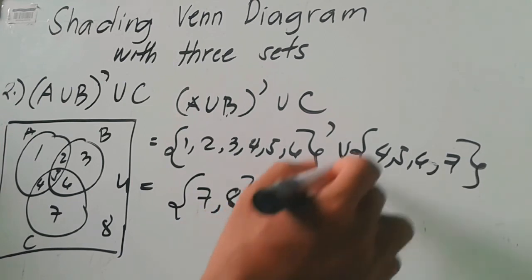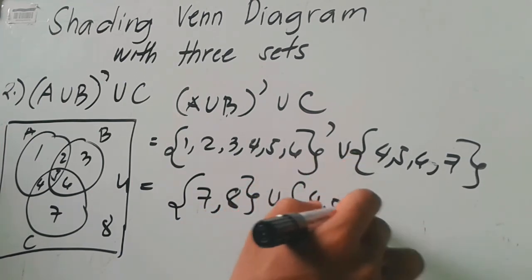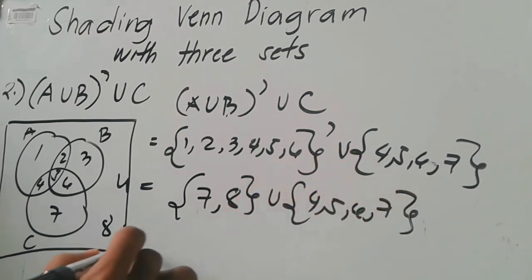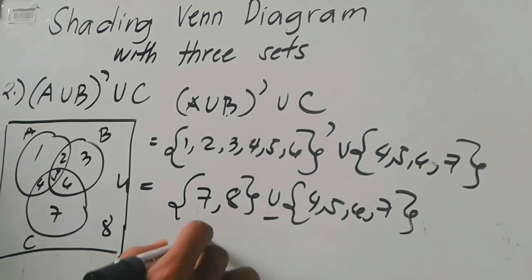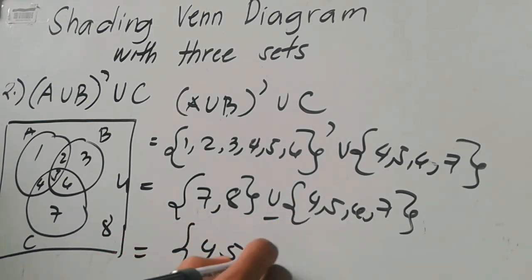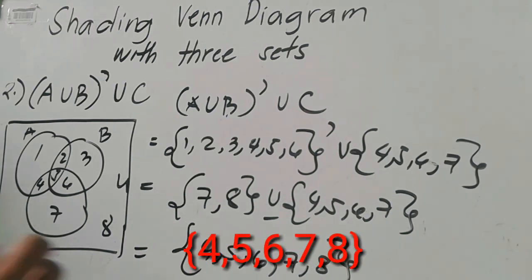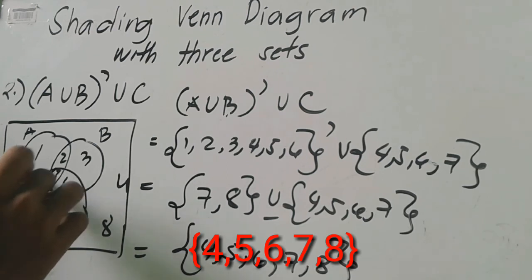Union four, five, six, seven. Union ibig sabihin lahat. Four, five, six, seven, and eight. So ito, ito ngayon yung mga shaded range, final answer. So four, five, six, seven, and eight.